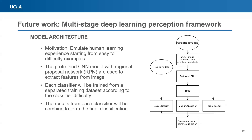The model will use a pre-trained CNN model with a regional proposal network to extract features from the image. These extracted features will be fed to three different classifiers. Each classifier will be trained from a separate training dataset according to the classifier difficulty. The result of all of these classifiers will be combined to form the final classification.